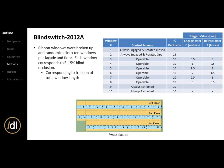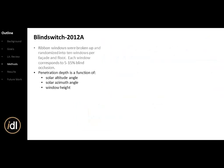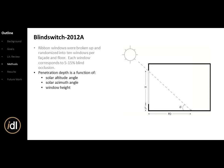The ribbon windows were broken up and randomized into 10 windows per facade per floor, each corresponding to the 5 to 15% of blind inclusion. The fraction of windows corresponds to the total length of windows — so for a 100-foot span, 15% would be a 15-foot window. Each window is operated as its own component. Window 3, for example, will only engage if 120 W/m² exterior illumination is met with a penetration depth of 0.5 meters, and retracts after three hours below 120.